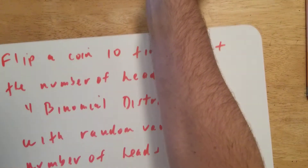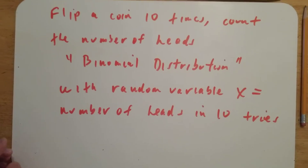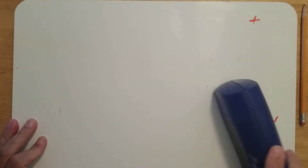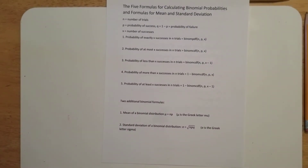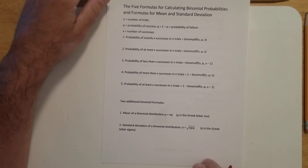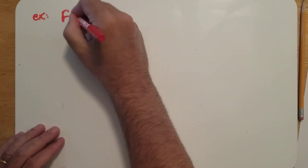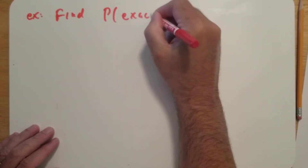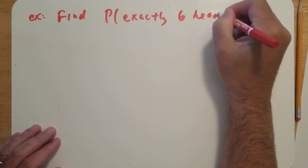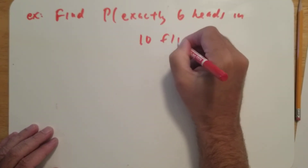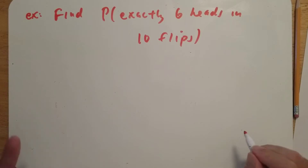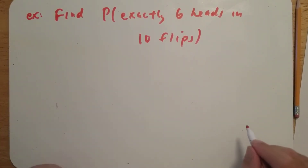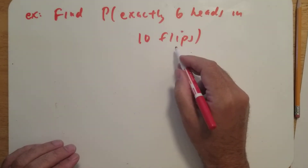To calculate probabilities, we're going to use the calculator. I have a printout called the five formulas, available in Canvas for this section. For the first example, find the probability of exactly six heads in 10 flips. Your job is to identify the n, the p, and the x, and then put it into the calculator correctly. The 10 flips means n is 10.